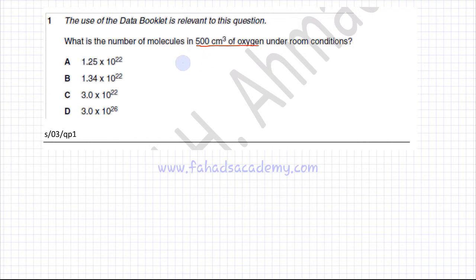First, we're going to find the moles of oxygen. The moles of oxygen would be the volume of oxygen, which is 500 cm³, divided by the molar volume, which for any gas is 24,000 cm³. So it's 500 cm³ divided by 24,000 cm³.